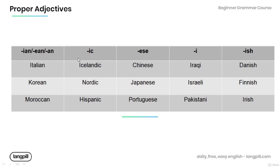Proper adjectives that end in '-ic' include Icelandic, Nordic, and Hispanic. Those ending in '-ese' include Chinese, Japanese, and Portuguese. Other forms include Iraqi, Israeli, and Pakistani. Adjectives ending in '-ish' include Danish, Finnish, and Irish.